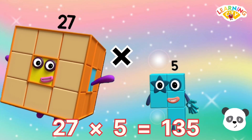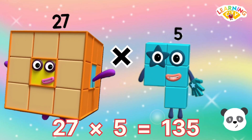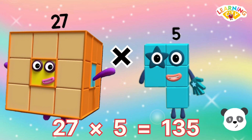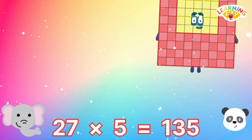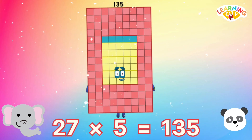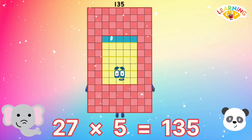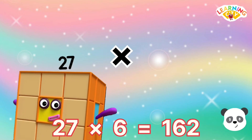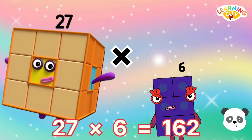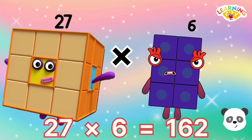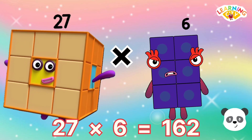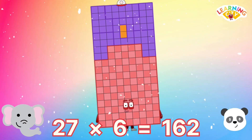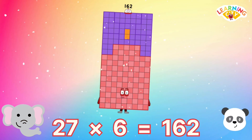27 multiply 5 equals 135. 27 multiply 6 equals 162.